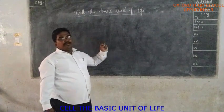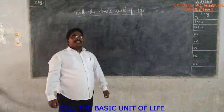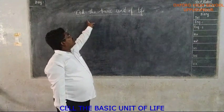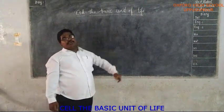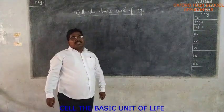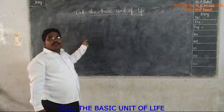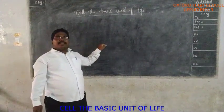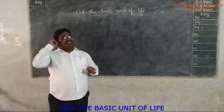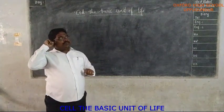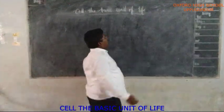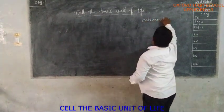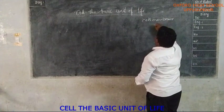Dear students, in the last class we discussed what a cell is and why it is called the basic unit of life. Cell is the structural and functional unit of life. The different types of parts present inside a cell are called cell organelles. We have already discussed cell membrane and cell wall.